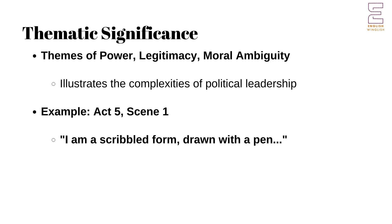King John's character embodies themes of power, legitimacy, and the moral ambiguities of kingship. His actions illustrate the lengths to which a ruler will go to secure power and the ethical compromises involved in political leadership. Through King John, Shakespeare explores the complexities of legitimacy and the destructive consequences of unchecked ambition. In Act 5, Scene 1, John reflects on the instability of his reign.